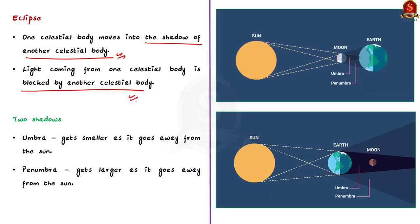During an eclipse, two shadows are cast. The first is called the umbra and this shadow gets smaller as it goes away from the sun. It is the dark center of the eclipse shadow. The second shadow is called penumbra. The penumbra gets larger as it goes away from the sun.